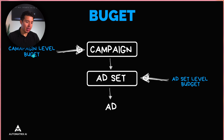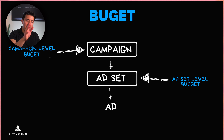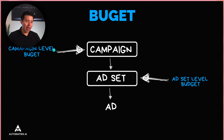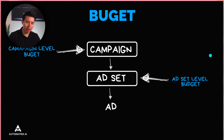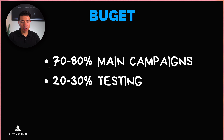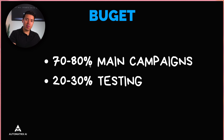On budget: you can set the budget at the campaign level using Advantage Campaign Budget and let Meta distribute it across your ad sets, or set it at the ad set level. Either works depending on your strategy, but setting it at the campaign level is generally easier since you don't have to manage budgets across individual ad sets. A good strategy is to have 70-80% of your budget on proven campaigns and a smaller portion to test different creatives and strategies.